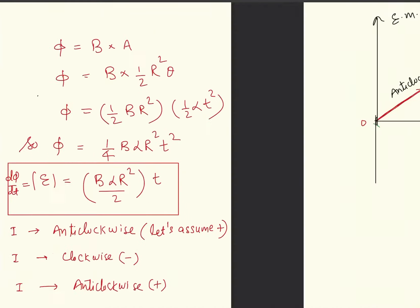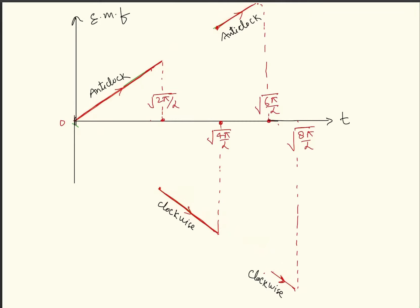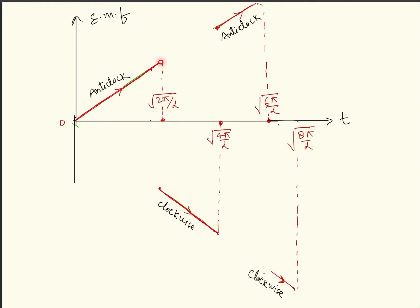For the EMF vs time graph: the current increases linearly. From root(2pi/alpha) to root(4pi/alpha) the loop comes out of the magnetic field, current reverses — it was anti-clockwise, slows down, then starts in the clockwise (opposite) direction and increases. Once 2pi rotation is complete, the loop re-enters the magnetic field; clockwise current slows, reverses to anti-clockwise and increases again. At root(6pi/alpha) the direction reverses once more. The current alternates direction each half-rotation.